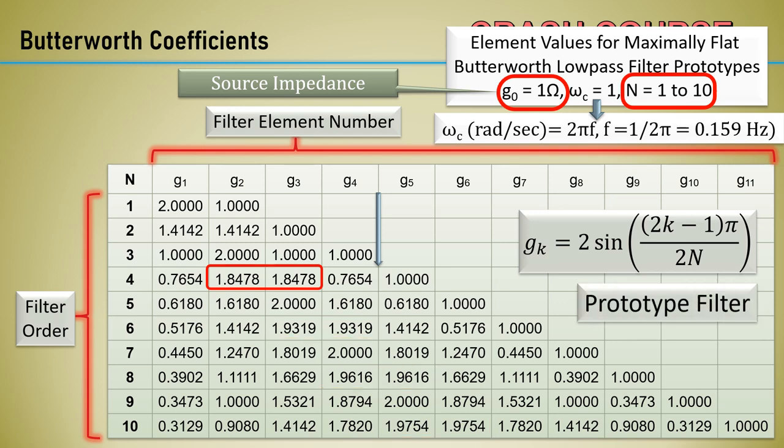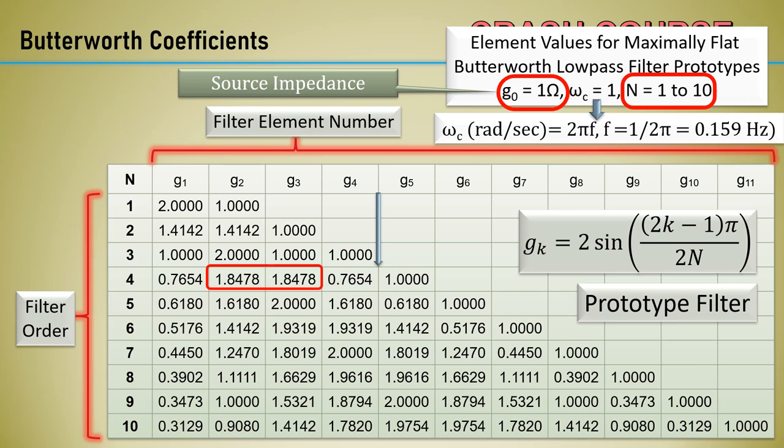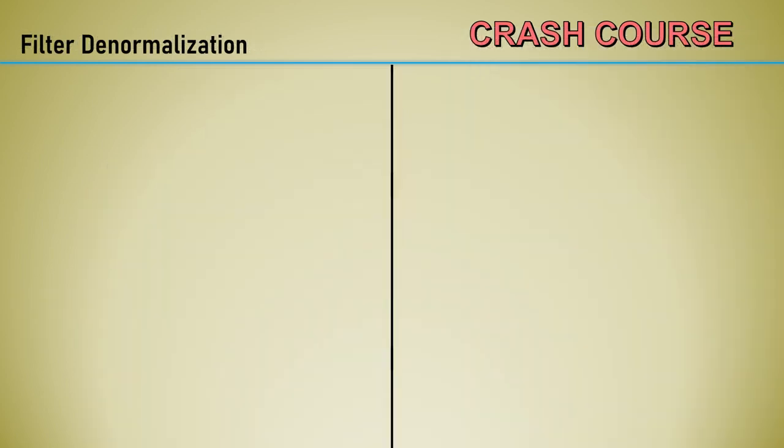These are called prototype filters because it's a template of non-dimensionalized values. Filters are required to operate at many different frequencies, impedances, and bandwidths. The utility of a prototype filter comes from the property that all of these other filters can be derived from it by applying a scale factor to the components of the prototype. The filter design needs to only be carried out once in full and the other filters being obtained by simply applying a scaling factor. This is why I said Mr. Butterworth did all the heavy lifting for us.